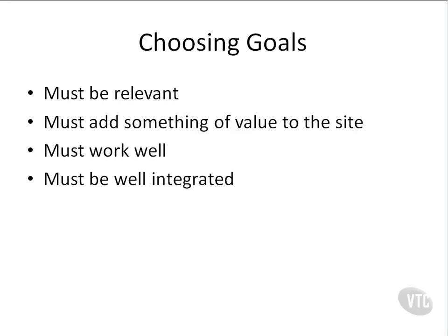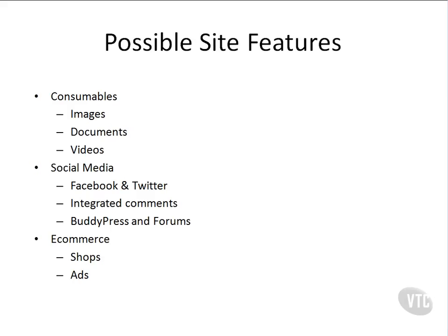We have to work on everything being well integrated with our site. Some of the site features include consumables, social media, and e-commerce. Consumables are anything our viewers can consume — that's video galleries, documents, pictures, things like that. Social media involves integrating our own Facebook and Twitter into our content, usually in the form of a sidebar widget.